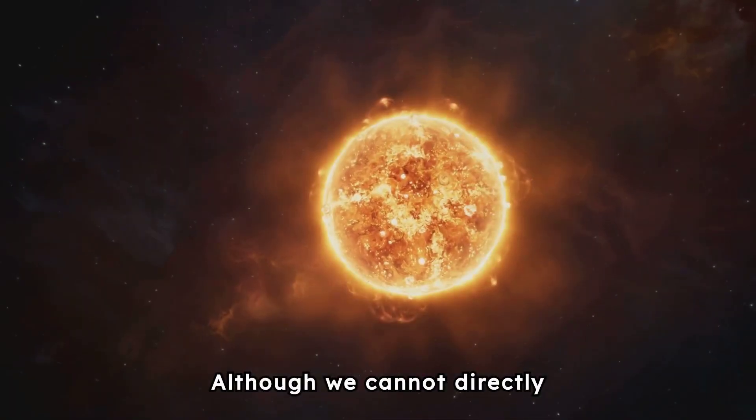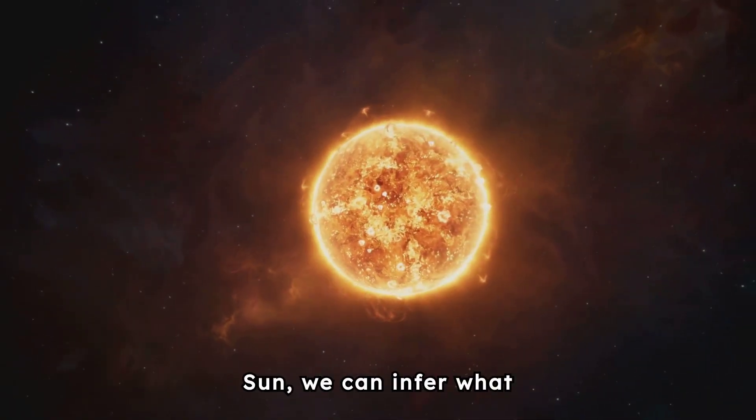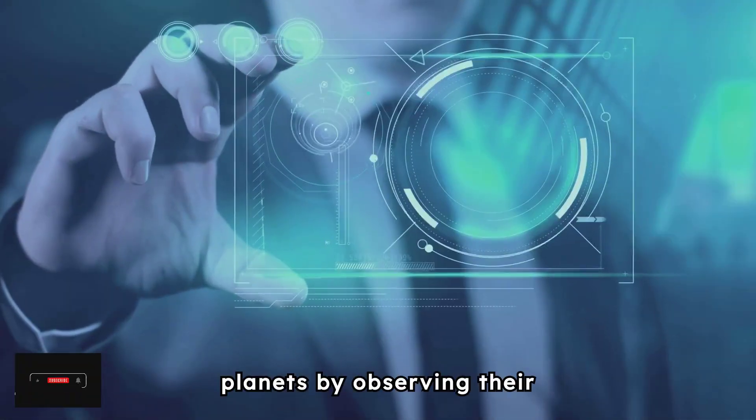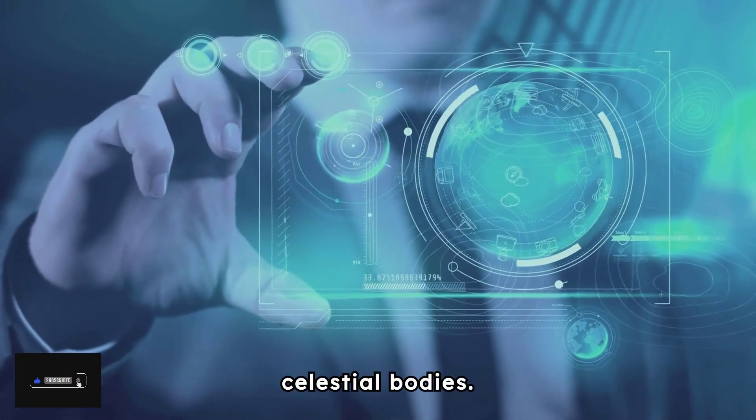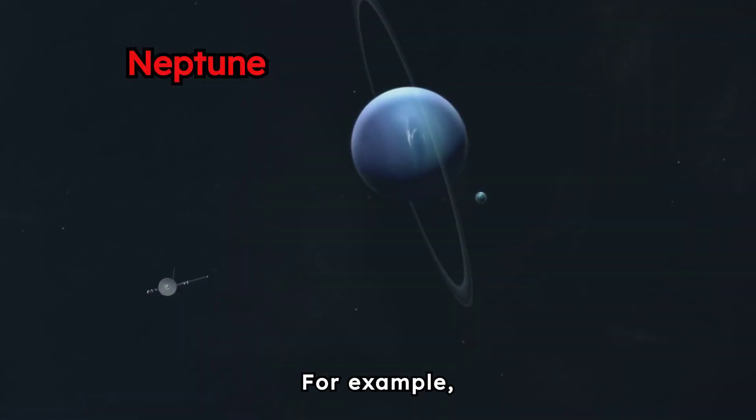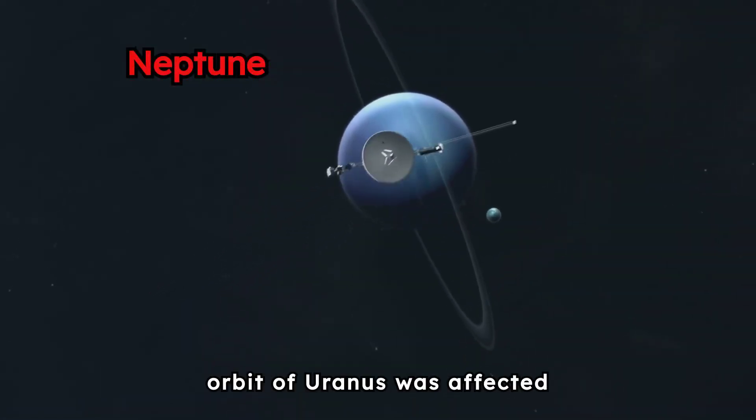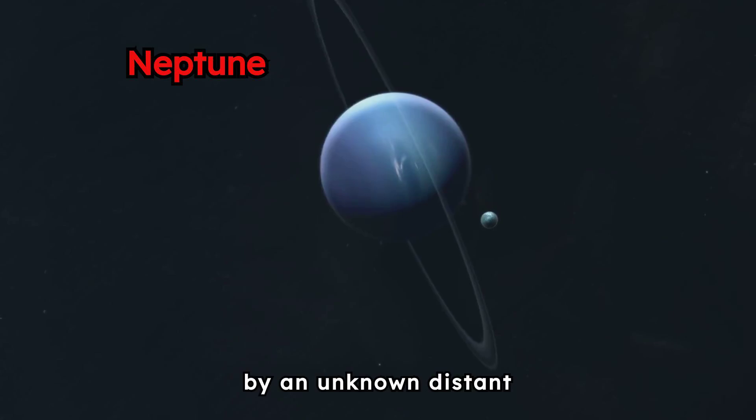Although we cannot directly see the far side of the Sun, we can infer what occurs there. Astronomers detect planets by observing their influence on other celestial bodies. For example, Neptune was discovered when scientists noticed the orbit of Uranus was affected by an unknown distant planet.